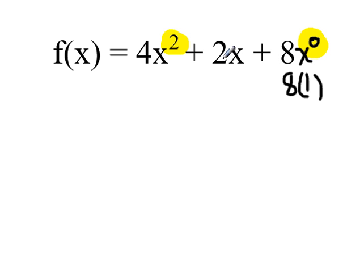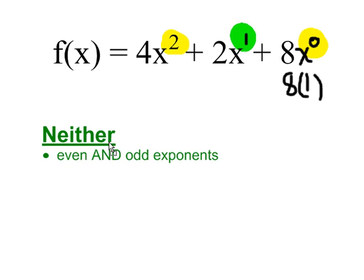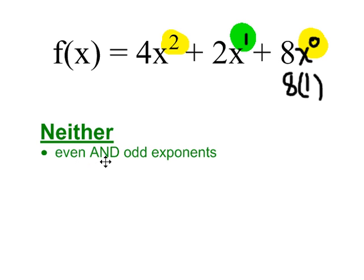But in the middle term, 2 times x, that's 2 times x^1, and 1 is odd. Since I have a combination of even and odd exponents, this function is neither even nor odd.